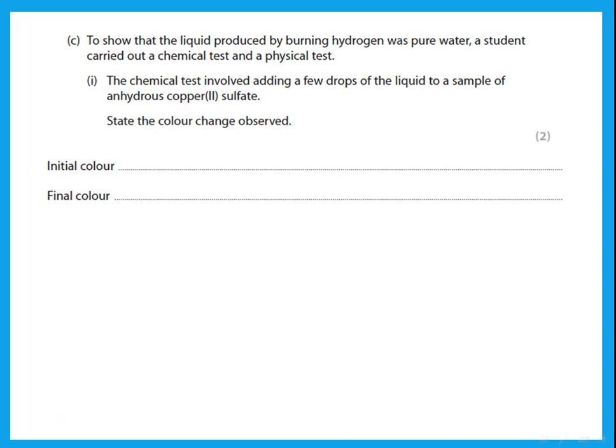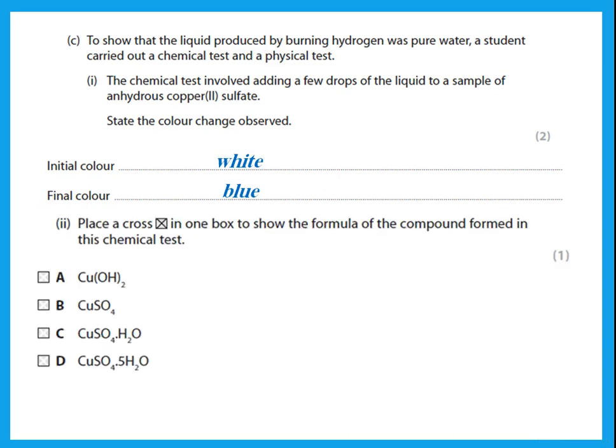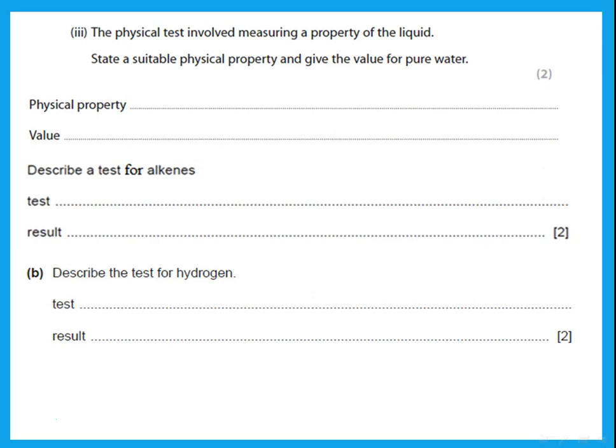To show that the liquid produced by burning hydrogen was pure water, a student added a few drops of the liquid to anhydrous copper sulfate. The chemical test for water: add anhydrous copper sulfate — it should change from white to blue. When water is added, the anhydrous copper sulfate becomes hydrated. The formula for hydrated copper sulfate is CuSO₄·5H₂O.